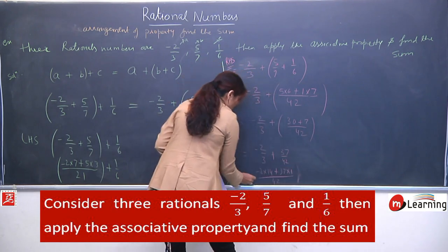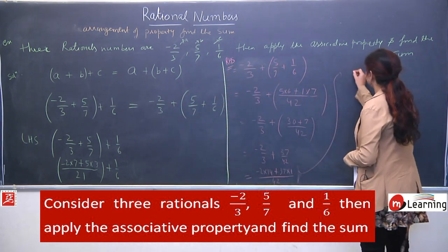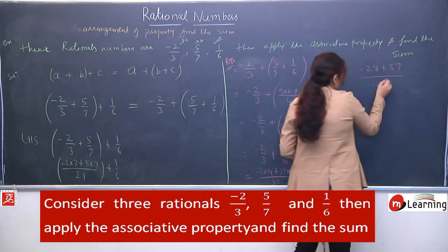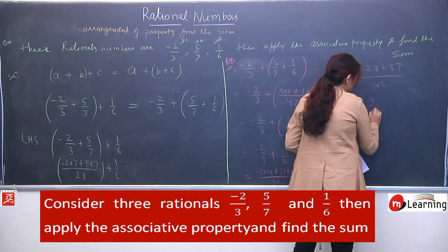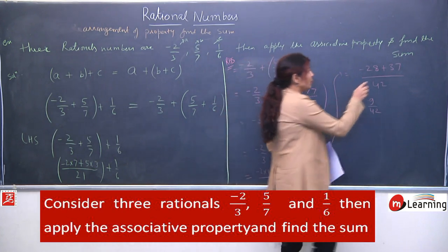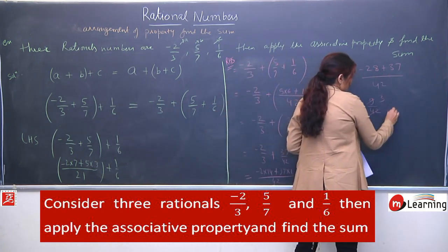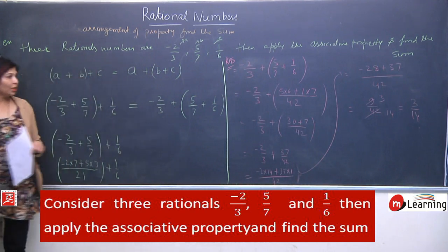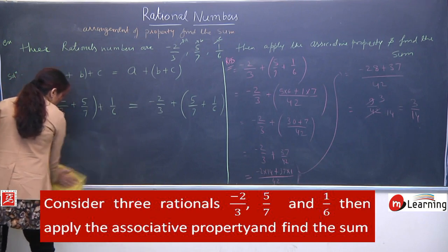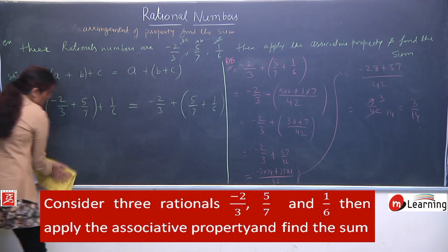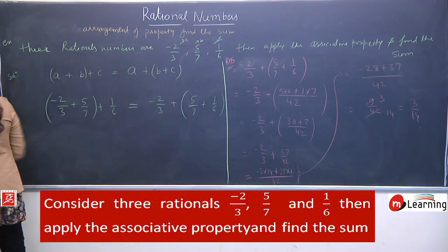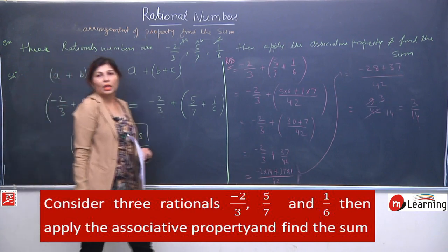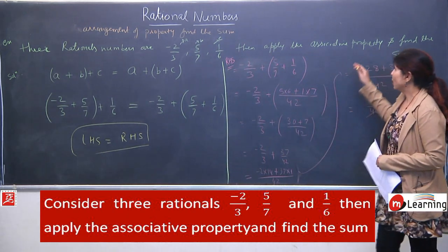Minus 2 into 14 is minus 28, plus 37 upon 42. Subtracting gives 9 upon 42, which is positive because the greater number has a positive sign. It cancels by 3, giving RHS = 3 upon 14. LHS was 3 upon 14 and RHS is also 3 upon 14, so they are equal. We can now write that the associative property is applying for these 3 rational numbers.